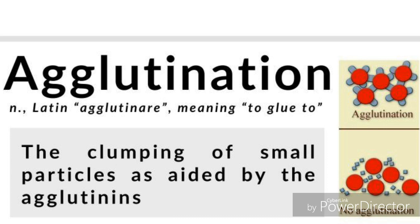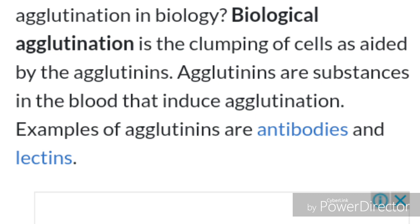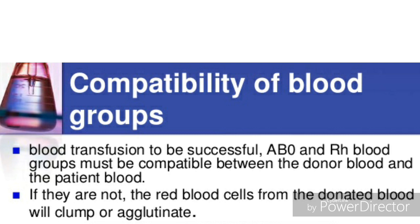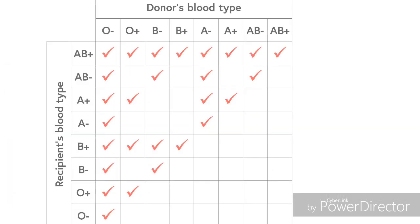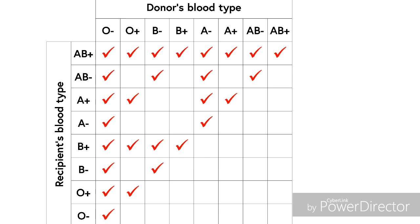Agglutination is the clumping of blood cells and it should not happen — all blood cells freely float in plasma and are not attached to one another. Red blood cells, white blood cells, and platelets all move freely in the plasma. Clumping of red blood cells can lead to death. Antigens are present on the surface of red blood cells, and antibodies are produced by lymphocytes to attack and kill germs. Agglutination happens when antigen-antibody reactions occur due to an unmatched blood group.